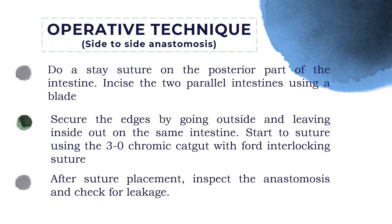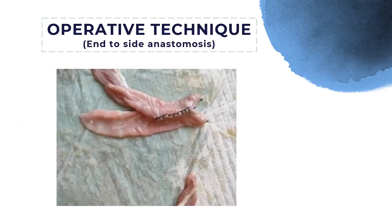The last procedure was side-to-side anastomosis. A stay suture was placed on the posterior part of the intestine. Incise the two parallel intestines, secure the edges going outside-in and inside-out on the same intestine. Start the suture using 3-0 chromic gut with a four-point interlocking suture pattern. After suture placement, inspect the anastomosis and check for leakage. The four-point interlocking suture pattern is clearly visible in the result.